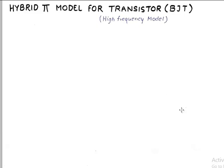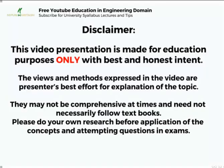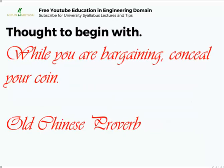The prerequisites for this tutorial is the understanding of hybrid model, which is h-parameter model. We need to appreciate the fact that h-parameter model is mainly focused for low frequency operations of BJT. So hybrid pi model will take into account all those considerations which are required for high frequency working.